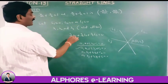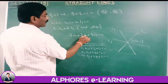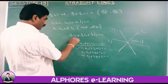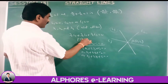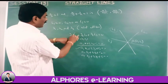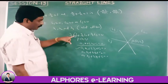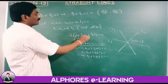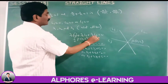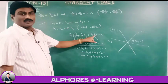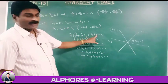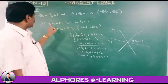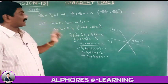Substituting P(x1,y1) into lambda-1·l1 plus lambda-2·l2 plus lambda-3·l3: since each li evaluated at P equals 0, the entire expression gives 0 plus 0 plus 0 equals 0. This confirms that this family of concurrent lines always satisfies this condition — very important.